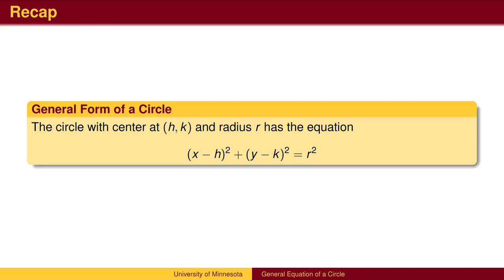To recap, if you're given the center of a circle at (h, k) and radius r, the equation of the circle is the Pythagorean Theorem: x minus h squared plus y minus k squared equals r squared.